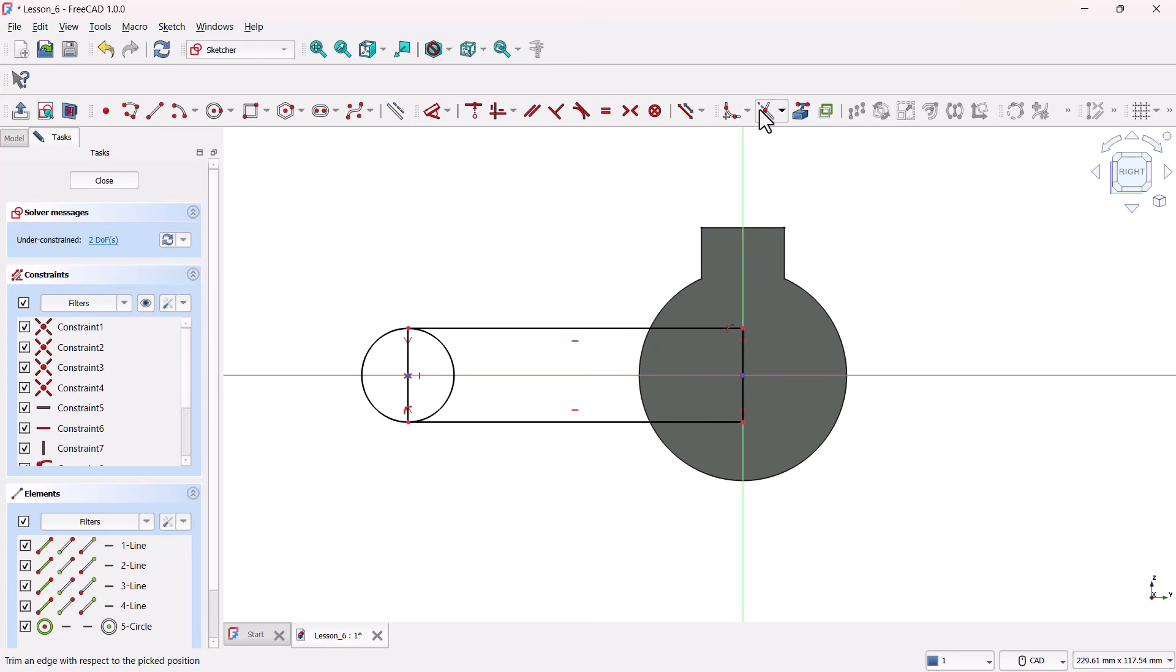Now, use this Trim Edge tool to clean up the overlapping lines. Just click the bits you don't need, and we're left with a smooth curve.